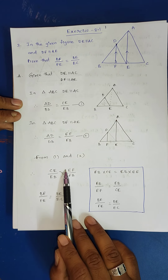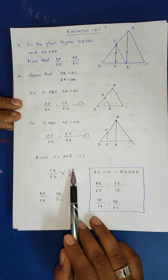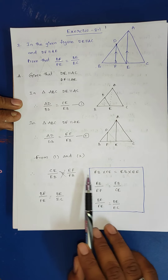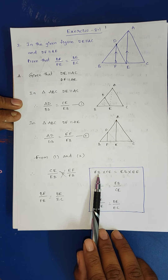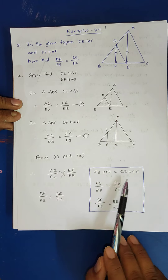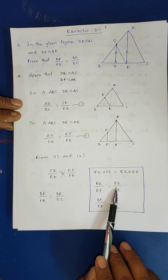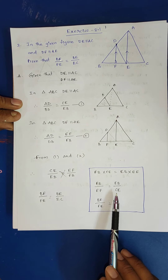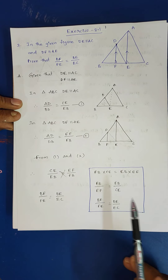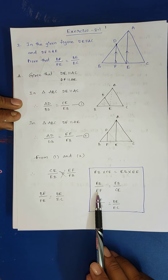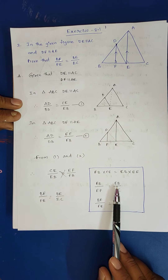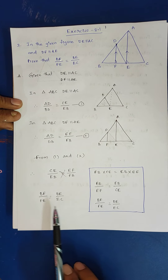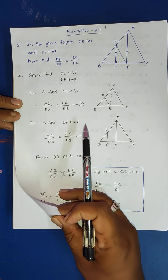Using cross multiplication: EF·B times CE equals EB times EF. Rearranging by keeping FB on one side and taking EF across: BF by EF equals EB by CE. Note that FB and BF are the same, EF and FE are the same, EB and BE are the same, CE and EC are the same. So BF by FE equals BE by EC — which is exactly what we wanted to prove. Third problem also completed.